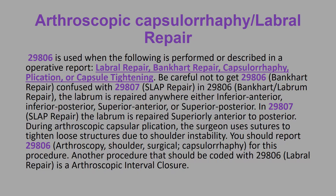During arthroscopic capsular plication, the surgeon uses sutures to tighten loose structures due to shoulder instability. You should report 29806 for this procedure. Another procedure that could be coded with 29806 is an arthroscopic interval closure, and that is also coded with 29806.